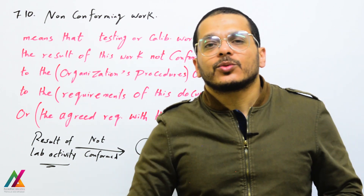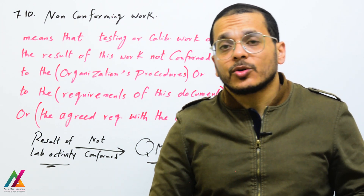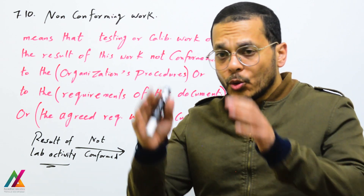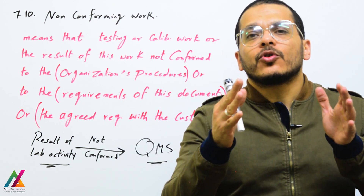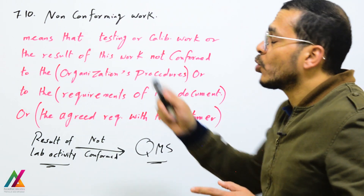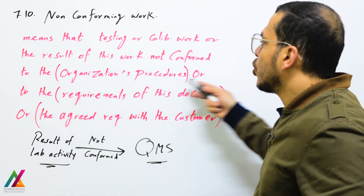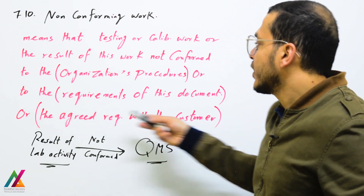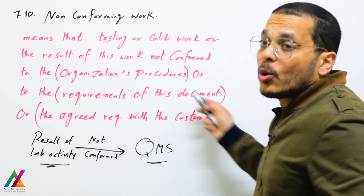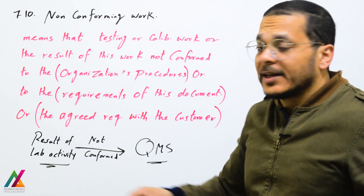Hello everyone, welcome back to the new lecture on ISO/IEC 17025:2017 edition, still in the process requirement: non-conforming work. What does non-conforming work mean? Work which is not conformed to the requirement — meaning testing or calibration work, or the result of this work, not conformed to the organization's procedures, or to the requirement of ISO/IEC 17025, or the requirement of the customer.